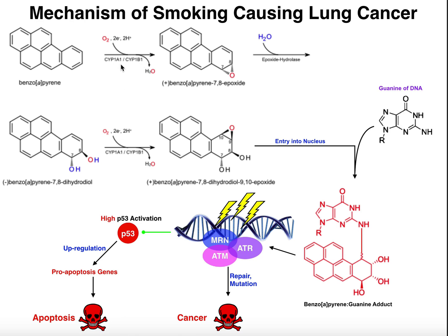This is again catalyzed by the same two P450 enzymes, CYP1A1 and CYP1B1. This time the epoxide goes up here on the position between 9 and 10. Now, because of these hydroxyl groups, it makes it less likely that this epoxide will react with epoxide hydrolase, because epoxide hydrolase is generally much better at targeting hydrophobic molecules. The left side of this molecule is still very hydrophobic, but where the epoxide is, there are two polar hydroxyl groups, which are going to prevent or at least hinder binding to epoxide hydrolase.